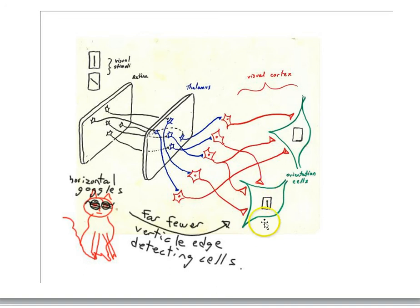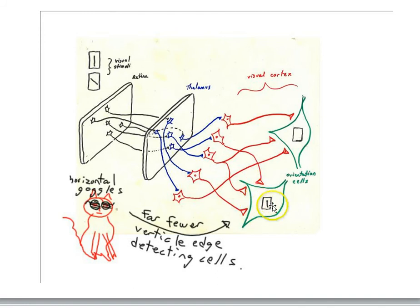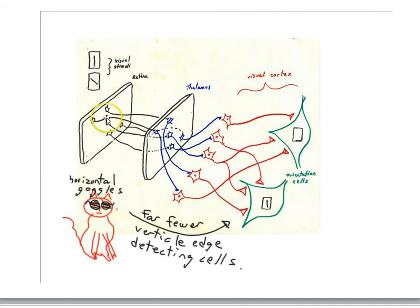What this means is that this green vertical edge detector only becomes active when all three of its synapses are simultaneously active. All three have to be releasing neurotransmitters, opening up channels, ions going in, and then it'll reach threshold and become active — it'll generate its action potential. The condition in which all three synapses are simultaneously active is the condition in which all three of the retinal cells are active, and that would be when there's a vertical edge being detected.